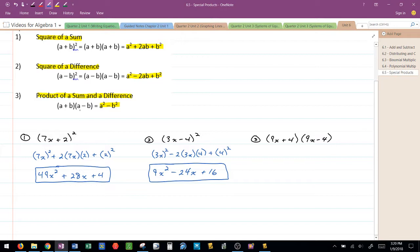And the last one, the product of a sum and a difference. Notice how the first terms are the same, the last terms are the same, but the difference comes where one's a positive and one's a negative or addition and a subtraction. This is another special case called the product of a sum and a difference.